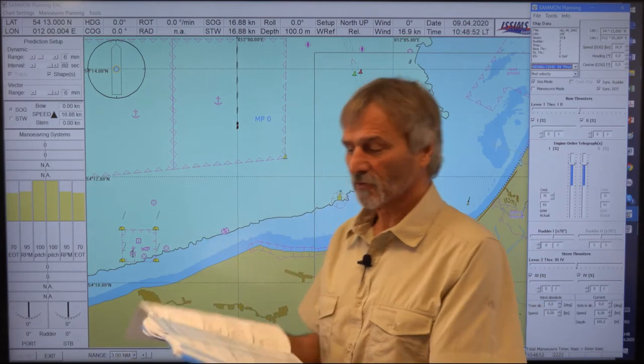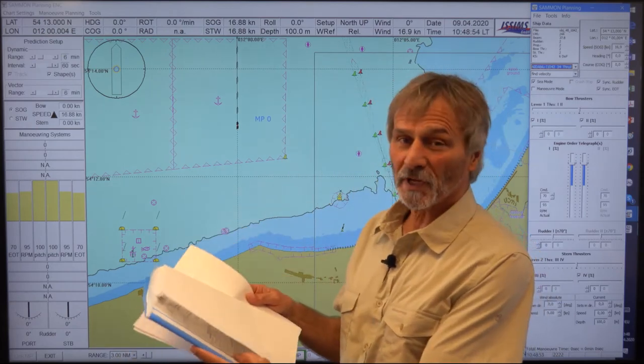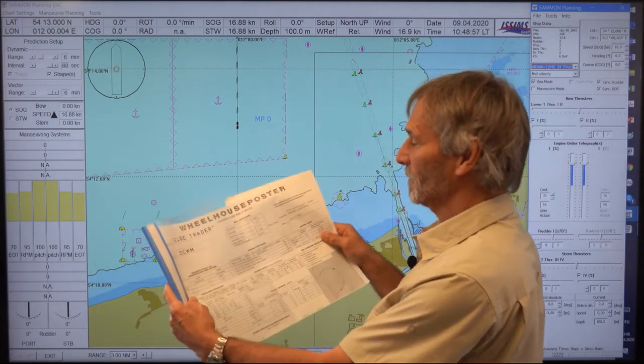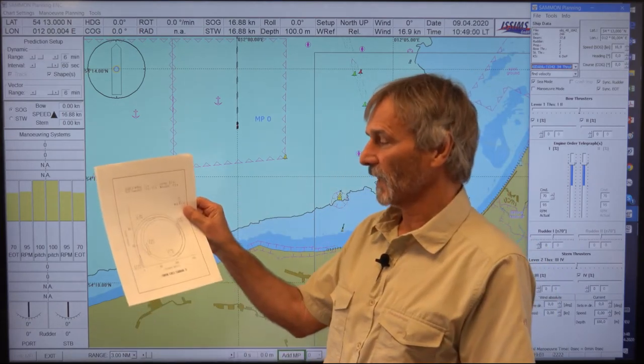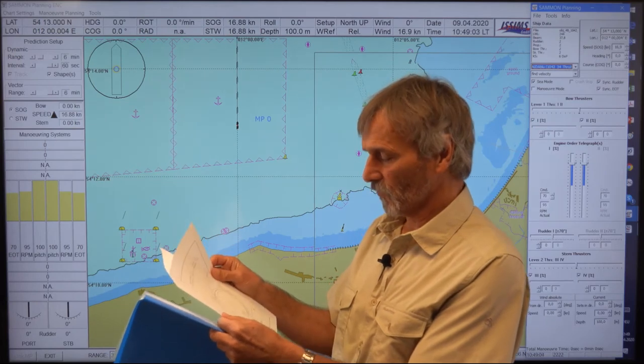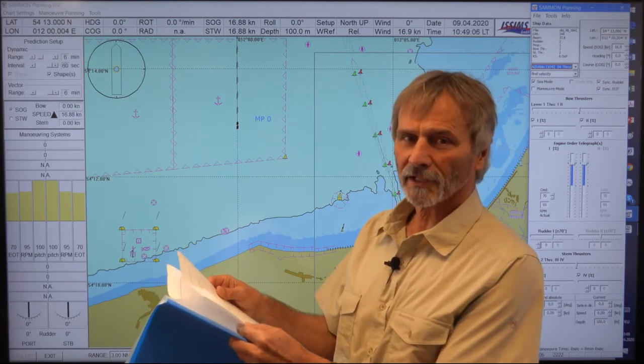Normally you get your information about turning capability either from the wheelhouse poster or from a maneuvering booklet with drawings like this: turning circle, port, starboard with full ahead and nothing else.